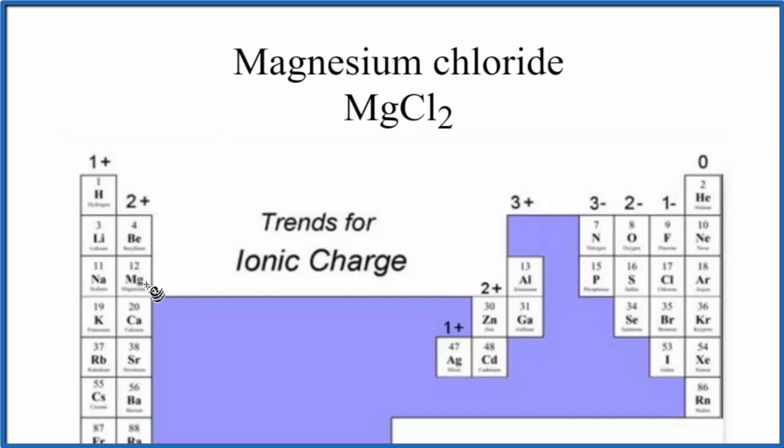Magnesium is in group 2, it has a 2-plus ionic charge. Chlorine over here has a 1-minus. We usually just write minus.